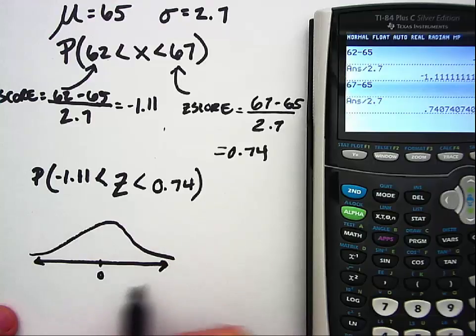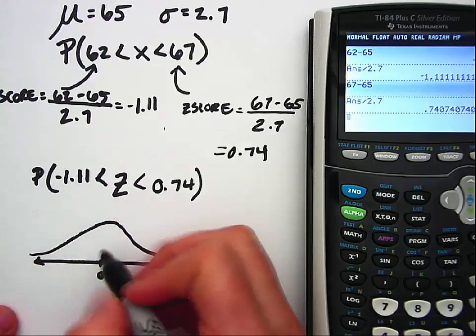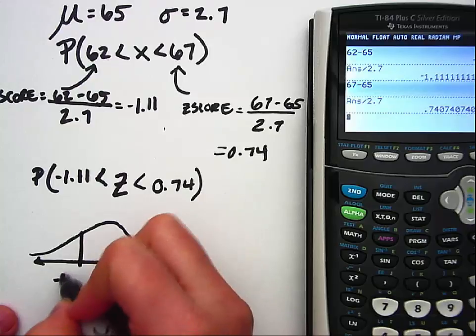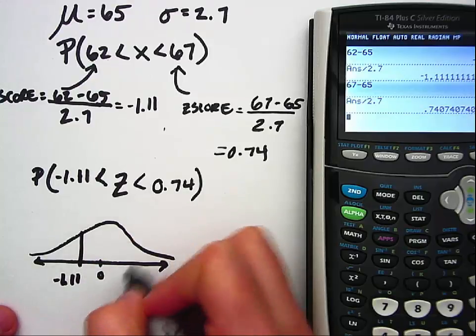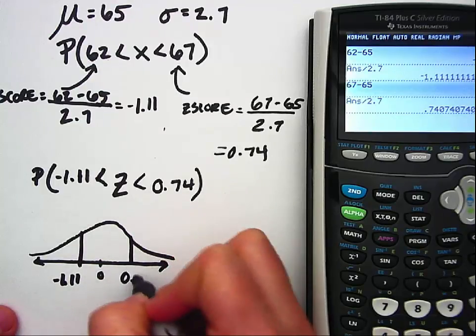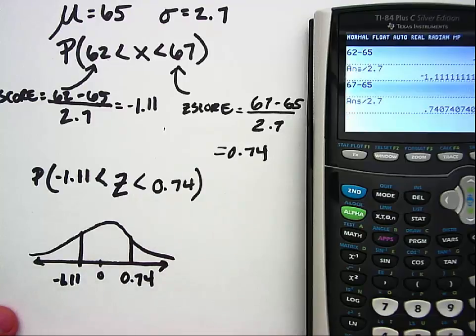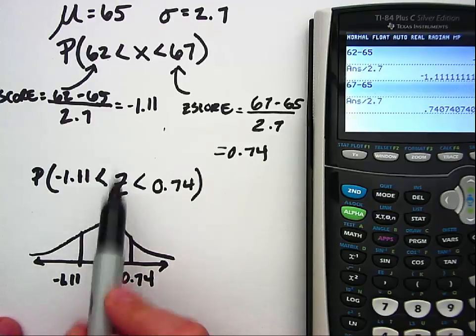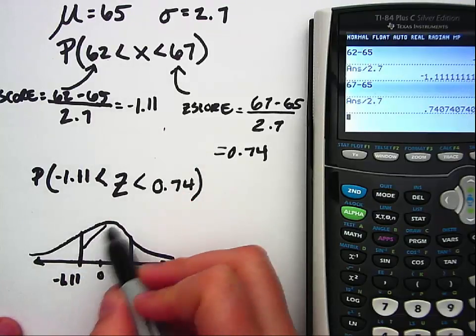So these are the standardized values that will fit onto our curve which remember is centered at zero. So with negative 1.11 we would be to the left because it's a negative value, and then 0.74 would be to the right because it's positive. So z is in between, we're interested in the area in between or this location.